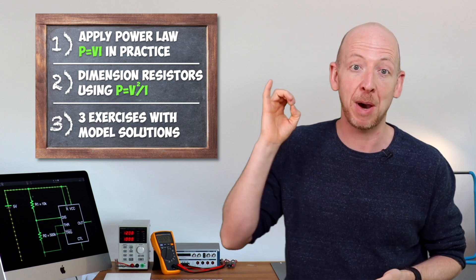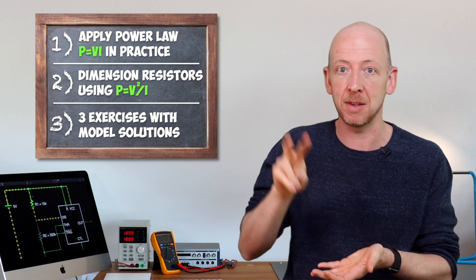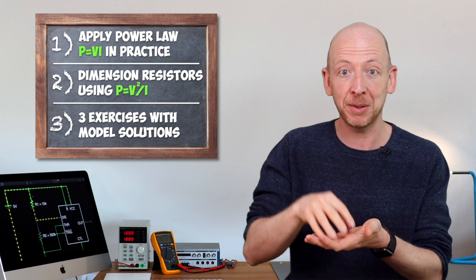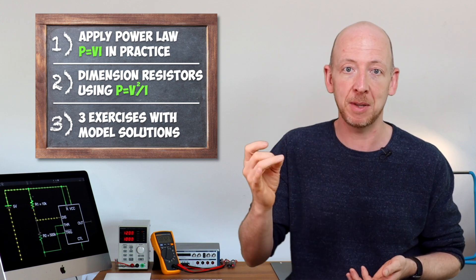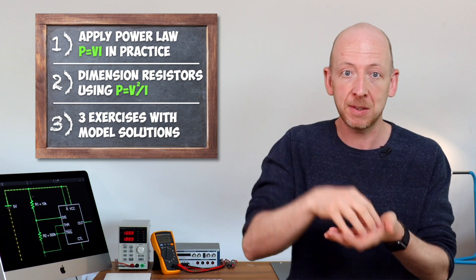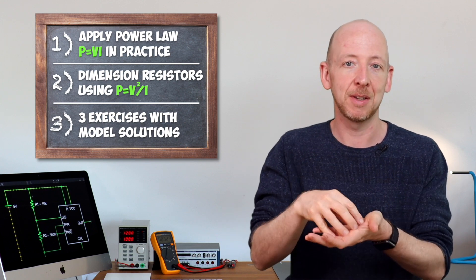In the first example we will calculate the power from both current and voltage, in the second example both from voltage and resistor value, and in the third example we will compute the maximally allowed voltage at a resistor so that its power limit is not exceeded.